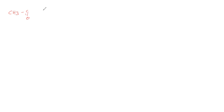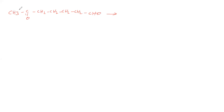Let us continue carbonyl compounds. We will continue aldol condensation. We will take the carbonyl compound CH₃CO(CH₂)₄CHO. In aldol condensation, alpha hydrogen should be there — at least one alpha hydrogen should be present. This carbon is directly attached to the aldehyde group, therefore this carbon is the alpha carbon. It has alpha hydrogen. This is the carbonyl group, and these carbons are alpha carbons with alpha hydrogens.